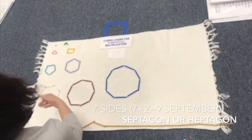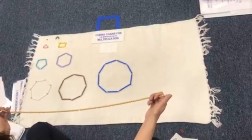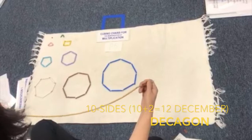So let's do 10. 10 plus two is 12. So the 12th month is December. It's what? Decagon. Decagon. Good, you got it. Decagon.